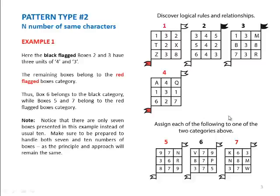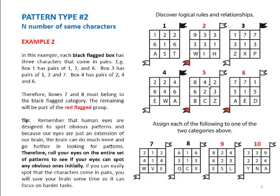Let's see the second example. This set contains 10 boxes, 1 through 10. The first 6 boxes belong to the question set and the black flagged boxes, i.e. boxes 1, 3 and 4, each contain a pair of characters. For example, box 1 contains pairs of 1, 2 and 6. Box 3 contains pairs of 1, 3 and 7, whereas box 4 contains pairs of 2, 4 and 6.